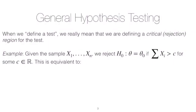So when we talk about defining a test, what we're really saying is that we are defining a critical region for that test. And we are almost always limiting ourselves to a test of a particular size. So remember, size, we denote alpha, it's also known as the significance level, and it's the probability of type one error. So we generally work with the class of tests of size alpha.